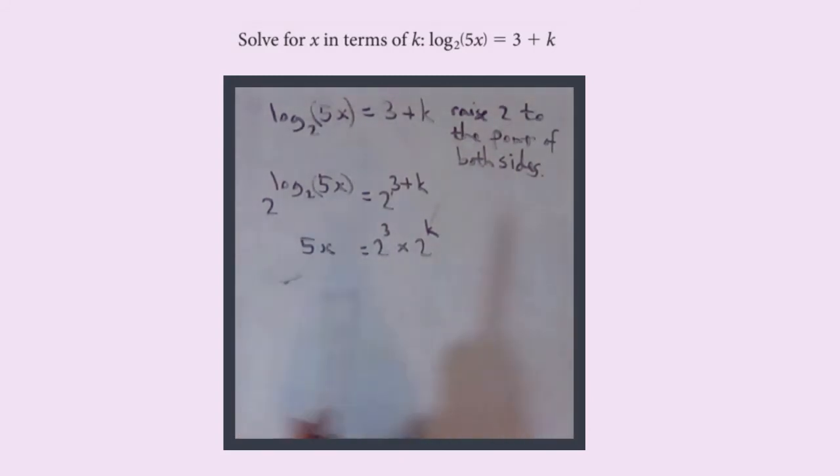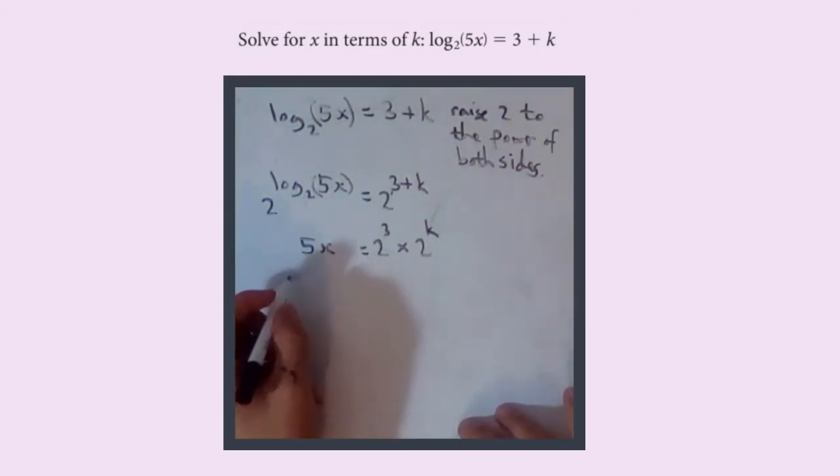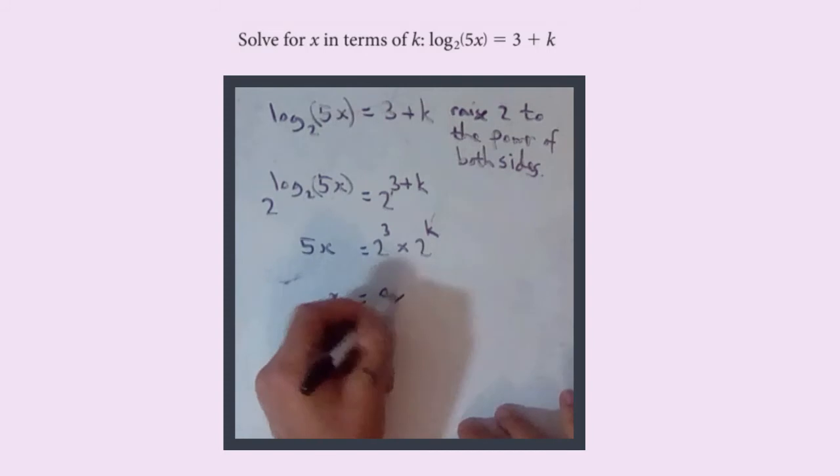It's easier to think about how you go from this to that. So 2 cubed is 8. We're trying to find x in terms of k, so we're solving for x. So x must equal 8 times 2 to the k over 5.